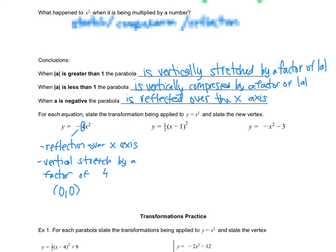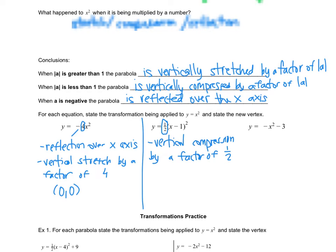The a value is one half, and one half is less than 1, so it must be a vertical compression by a factor of one half. Then there's a number inside the bracket — that's the right-left movement. It says x minus 1, but remember it means moving right. So shift right 1 unit. We moved to the right 1 but didn't move up or down, so the vertex is 1, 0.